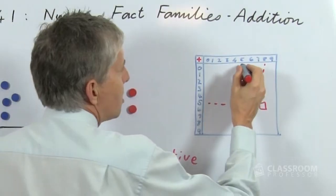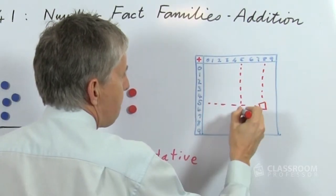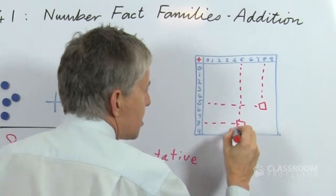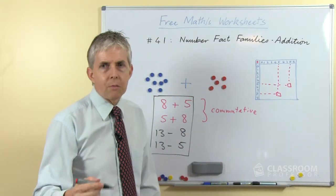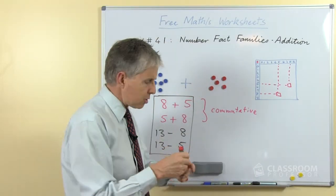But we can also find another one, because if we look at the 5 here and the 8 there, then there's a second intersection with the same number fact. And of course, again, it's the turnaround fact.